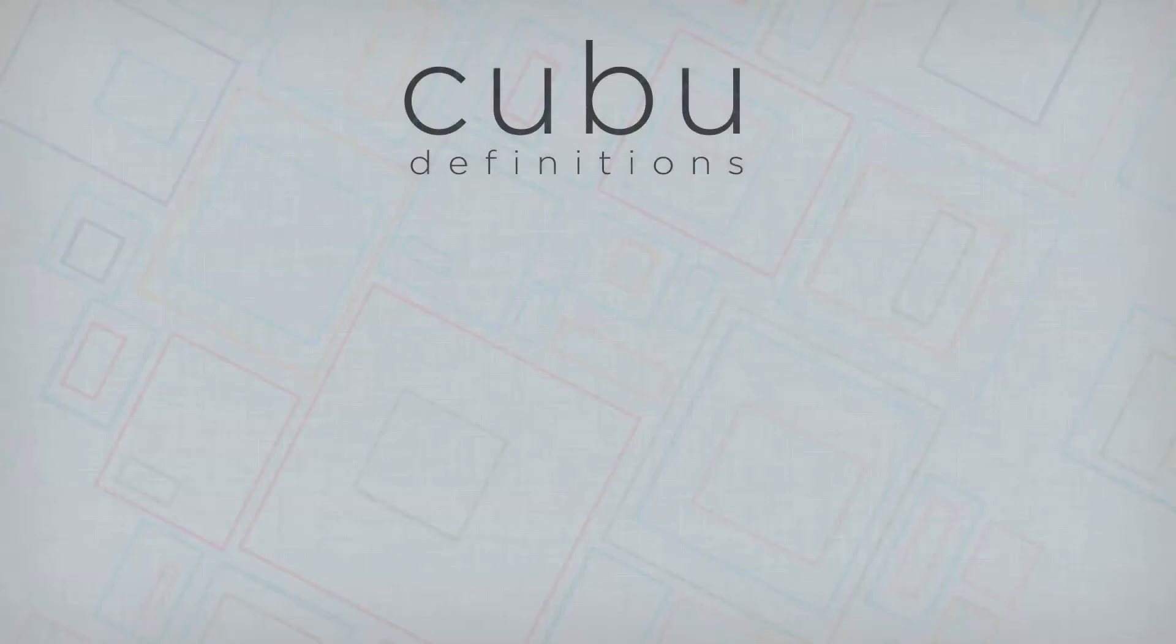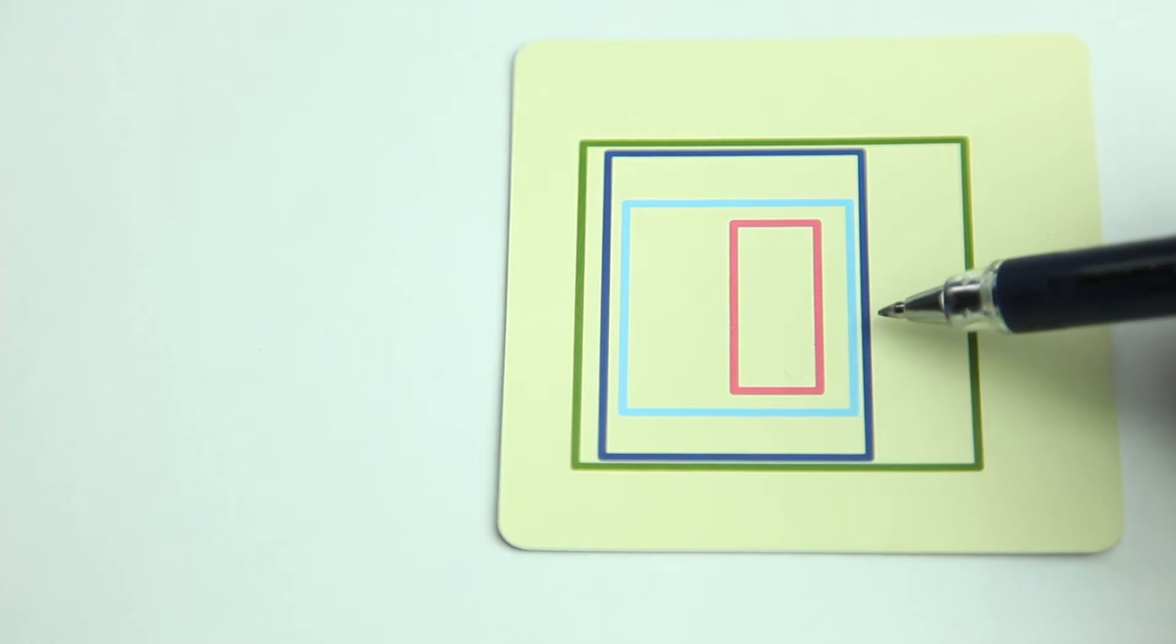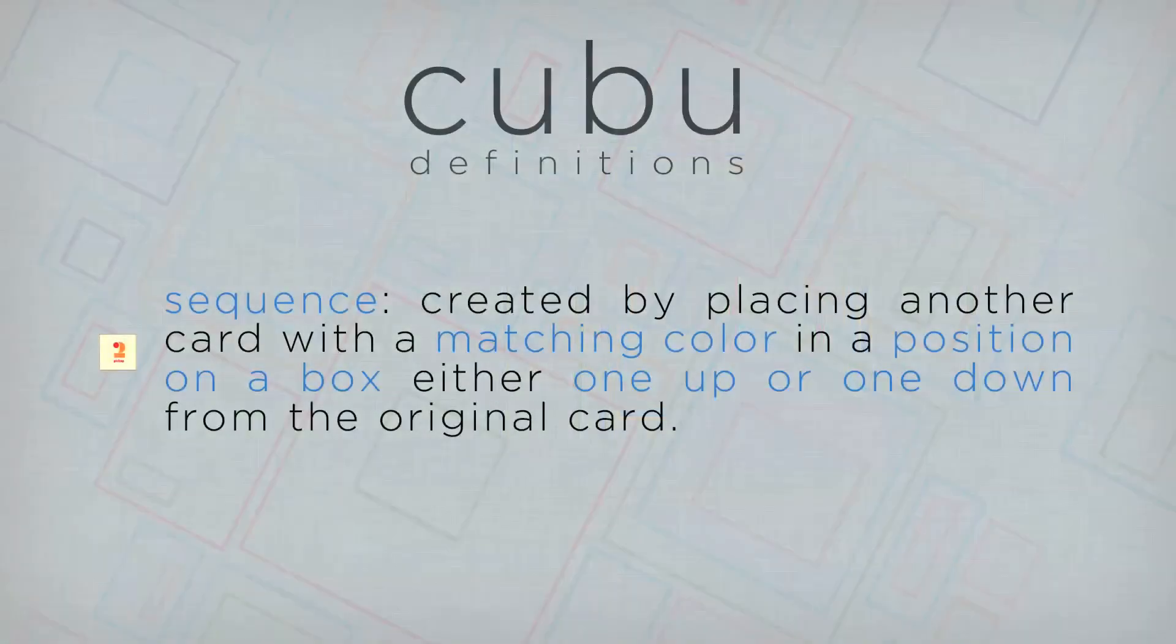Here are some definitions you need to know. The number of boxes. This is always counted from the inside to the outside. Sequence. A sequence is created by placing another card with a color and a position on a box, either one up or one down from that original card.